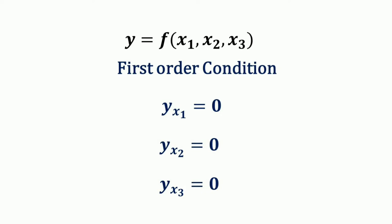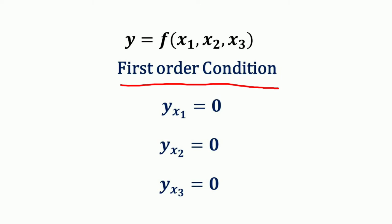Here we have a function y equal to f(x1, x2, x3), which means we have three variables, so we have a third order Hessian. In this case, we want to optimize this given function, so the first stage is to take the first order condition.